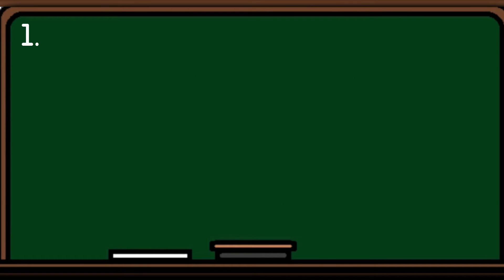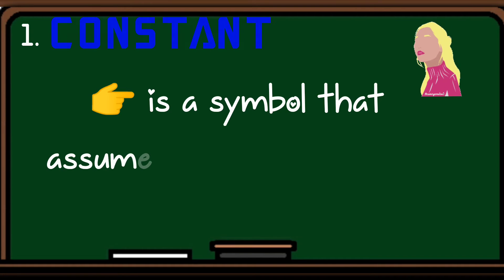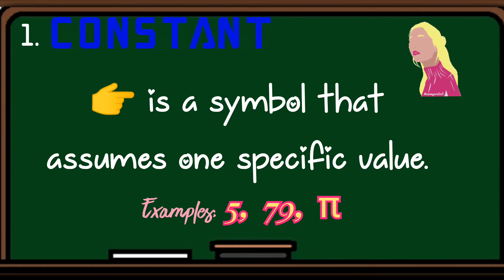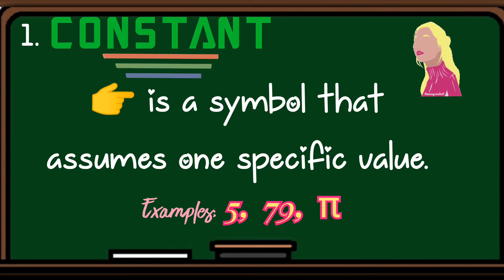Number one, a constant. A constant is a symbol that assumes one specific value. For examples, 5, 79, 5. So, ibig sabihin kaya siya tinawag na constant, hinding-hindi na mababago ang kanyang value. Naka-fix na siya.